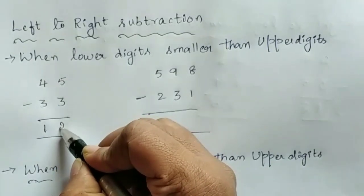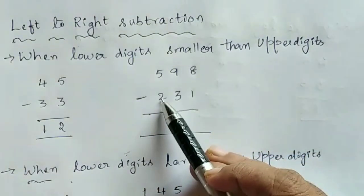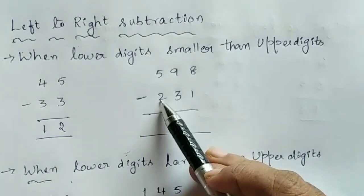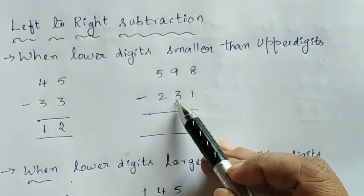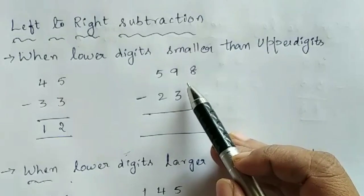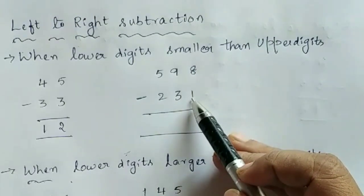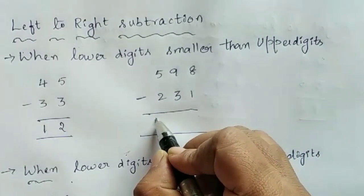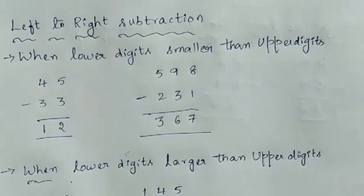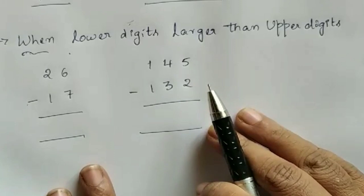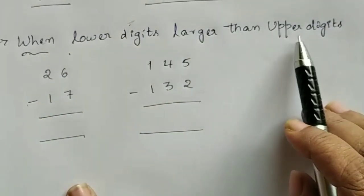For 45 minus 33: think of 1 before 5, which gives 15. 15 minus 3 is 12. So 12 is the answer. For 598 minus 231: 5 minus 2 is 3 — don't write 3 in the answer corner yet. Think of 3 before 9: that gives 39. 39 minus 3 is 36. Think of 36 before 8: that gives 368. 368 minus 1 is 367. So 367 is the answer. This is left-to-right subtraction. For 2-digit numbers it is easy for children; for 3-digit numbers it is somewhat more difficult.